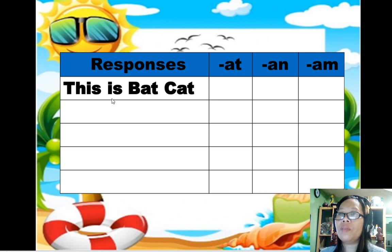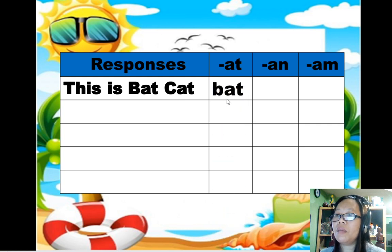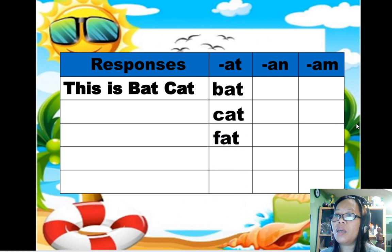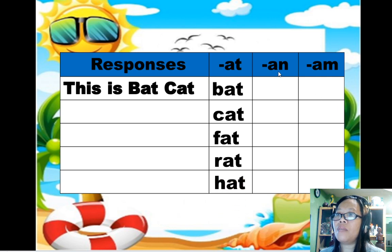This is bat cat. Bat. Cat. Fat. Rat. Hat. Let's say: can, ran.